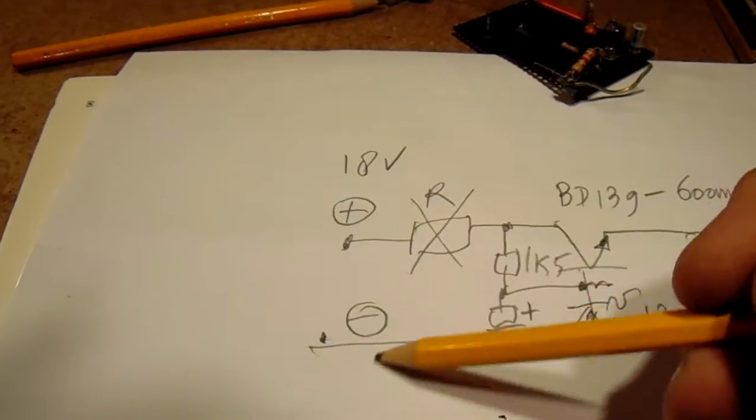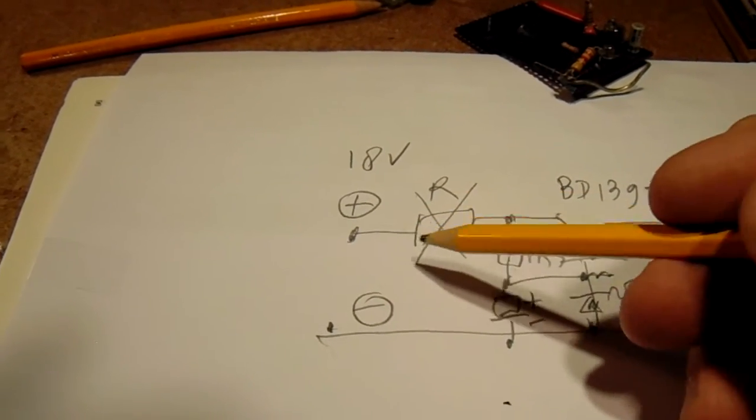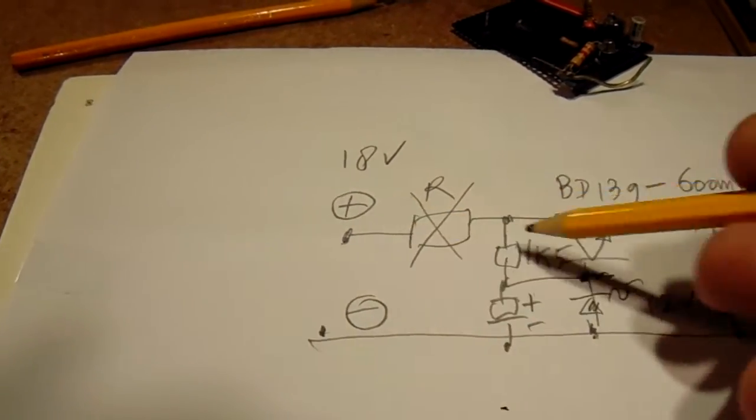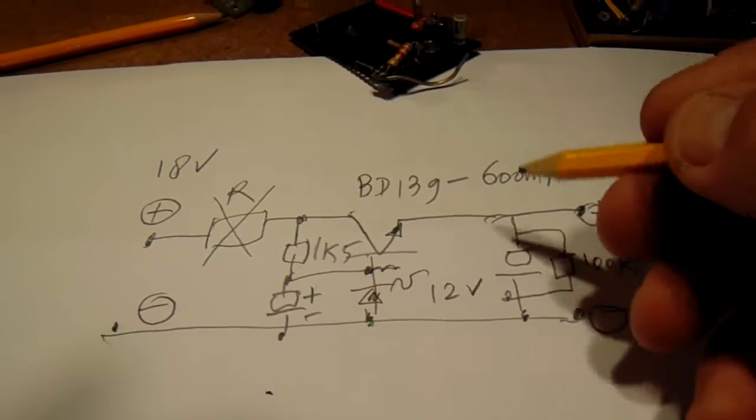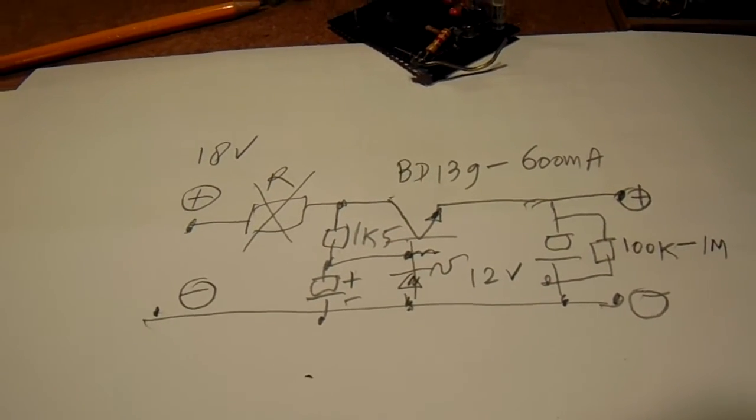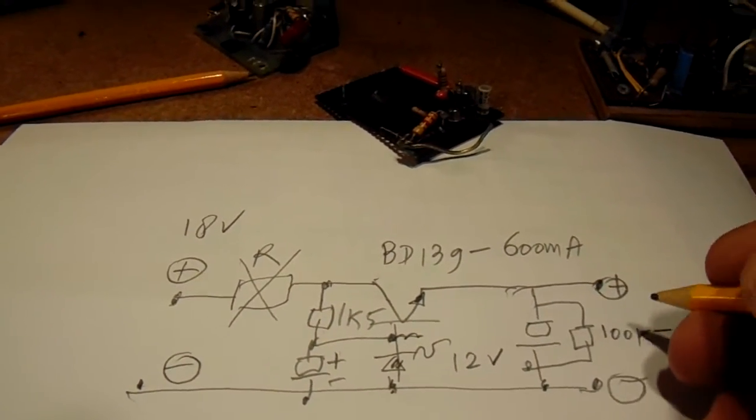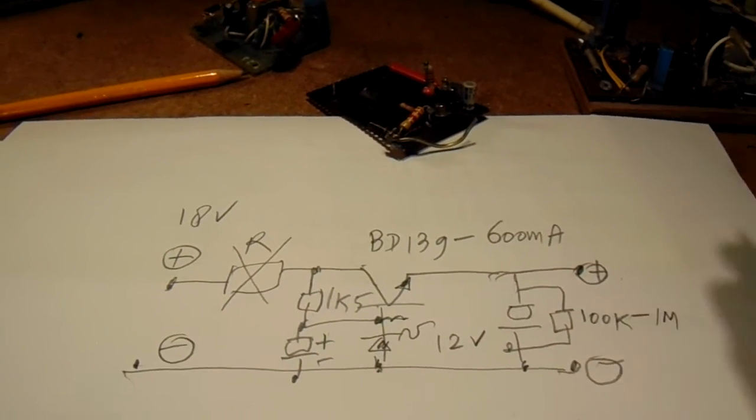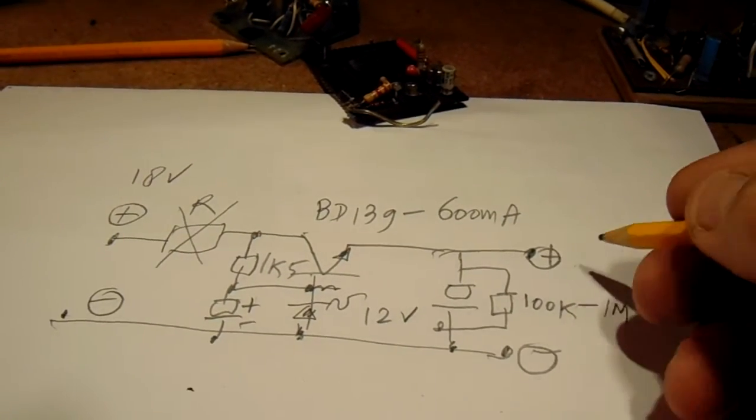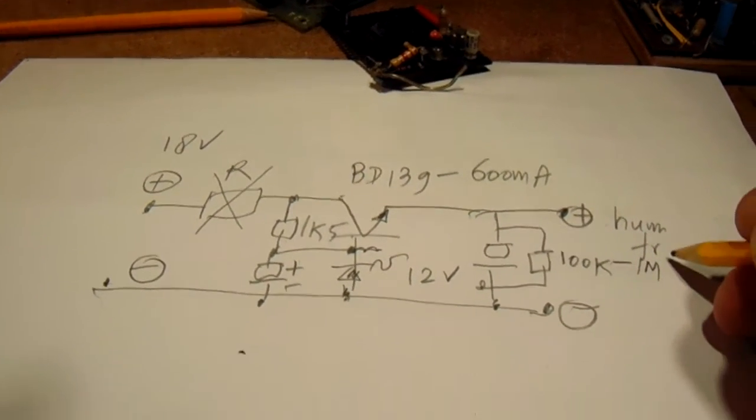When there's hum here or whatever disturbing signals on the power supply lead, you don't find them here. All the disturbances on the power supply lead are completely suppressed here, so here you have a completely hum free output voltage. And the reason is